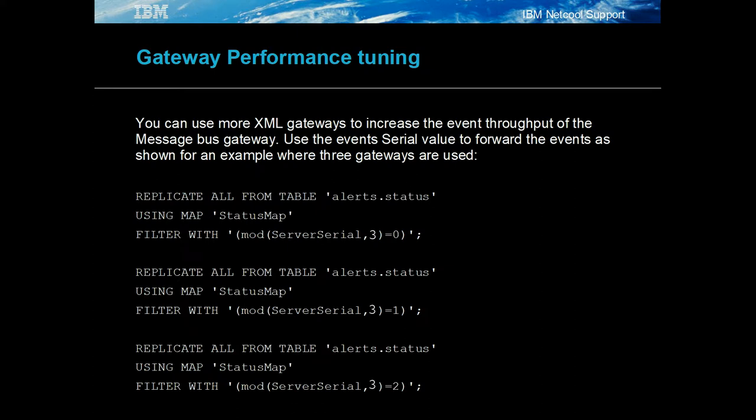For high event loads it is possible to use multiple gateways to forward events. The best practice method is to use the server serial or serial as a counter and then mod this counter by the number of gateways. This results in an integer between 0 and 1 minus the number of gateways, which allows these results to be used as a filter in the table replication file as shown.